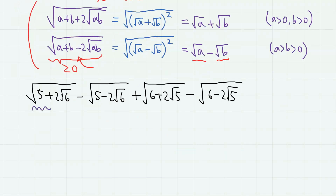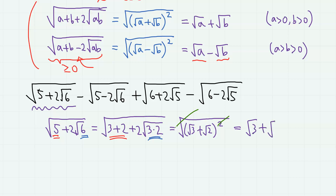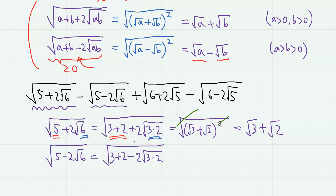Now let's apply this to our problem. For the first term, notice that 5 = 3 + 2 and 6 = 3 × 2, so the inner part is (square root of 3 + square root of 2) squared. If we remove the outer radical, we have square root of 3 + square root of 2. For the second term, we have a minus sign, so the inner part is (square root of 3 - square root of 2) squared, giving us square root of 3 - square root of 2.